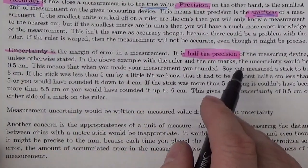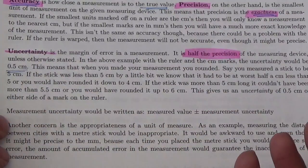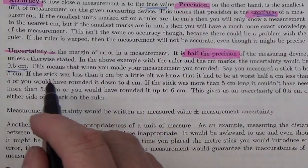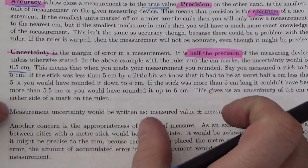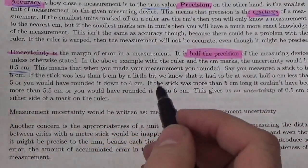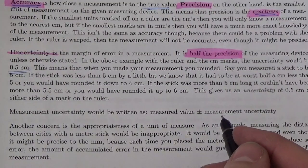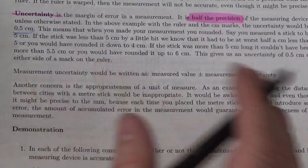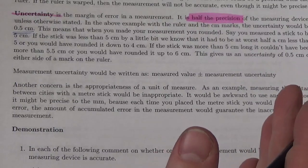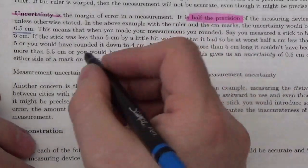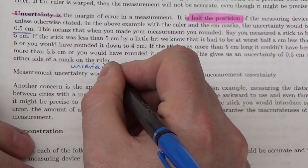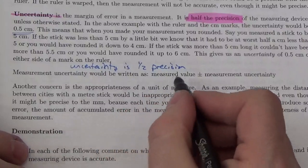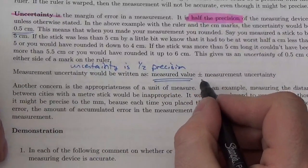So in the above example with the ruler with centimeter marks, the uncertainty would be half of a centimeter. If you're down to millimeters, it's going to be half of a millimeter. Let's say you've got a stick with a mark every five centimeters — your uncertainty would be half of that, or 2.5 centimeters. The way we normally write our measurement: once we know the precision, that gives us our uncertainty, because uncertainty is half the precision. Then the measurement is written as the measured value plus or minus the uncertainty.